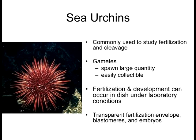That's why we use sea urchins as a model organism — because of all of those factors. We can manipulate them in a laboratory environment, watch them develop under a microscope, and they spawn in massive quantities. The main disadvantage is that you have to collect these organisms and then work with them in the laboratory. We can't propagate the species under laboratory conditions.